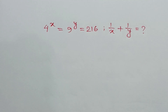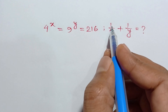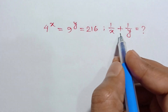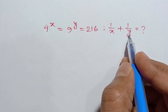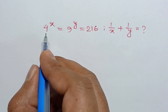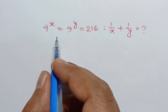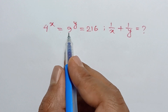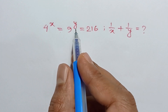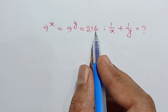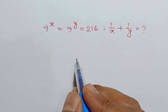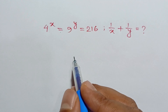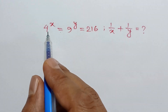In this video I am going to show how to find the value of 1/x plus 1/y, where 4 to the power x is equal to 9 to the power y is equal to 216.